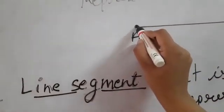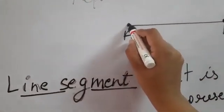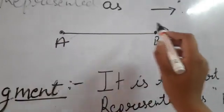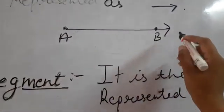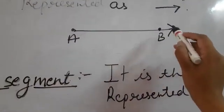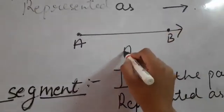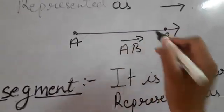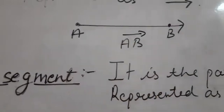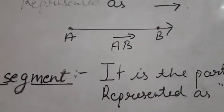The starting point is fixed, which is A, and it continues to move in the direction of B. We represent it as AB with an arrow over the letters.